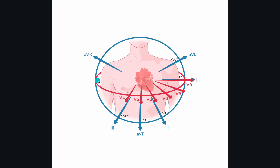The precordial leads depict the electrical activity of the heart in the transverse plane, whereas the limb leads depict the electrical activity of the heart in the frontal plane. And so these precordial leads, we have V1 through V6.